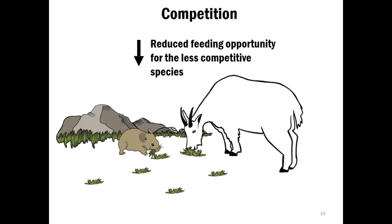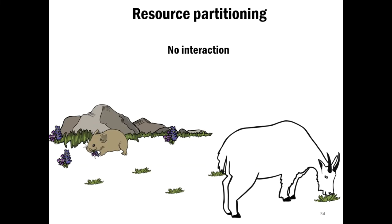These are kind of abstract, so we'll illustrate them. For competition to occur, you need two species both capitalizing on the same limited resource. Over time, both species feed on it and drive it down, resulting in reduced feeding opportunity for the less competitive species. The second is resource partitioning — this typically happens when one species focuses on one resource, like forbs, and the mountain goat focuses on grass, resulting in no interaction through resource competition. If we find this, it may seem like a moot answer, but it is still an answer that managers can use to better manage these species.